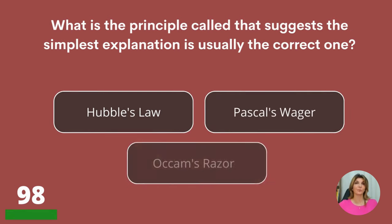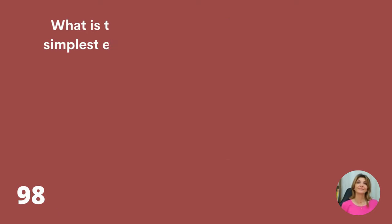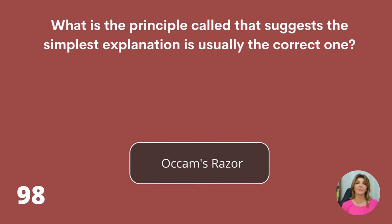What is the principle called that suggests the simplest explanation is usually the correct one? Hubble's Law, Pascal's Wager, or Occam's Razor? Occam's Razor.